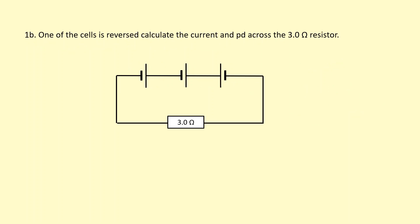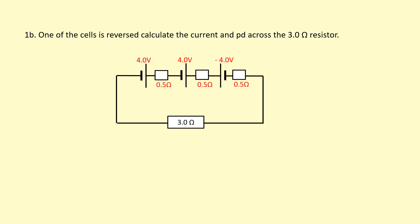Same question again except one cell has been reversed — it's connected the other way around. In this case, instead of gaining 4 joules of energy per coulomb, it's actually going to lose 4 joules. So the total EMF is 4 volts plus 4 volts minus 4 volts, giving a total of 4 volts.